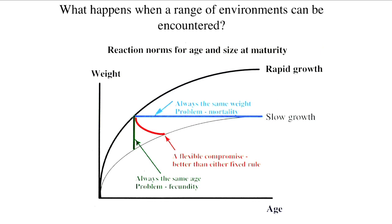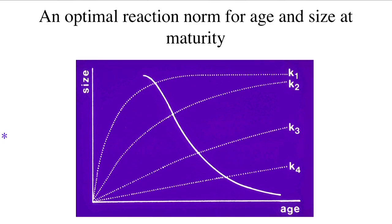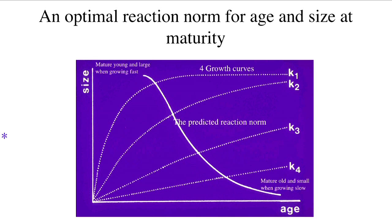If you go through the calculations, this is the optimal situation predicted by a theoretical model for the maturation event when there is variation in growth. The dotted lines represent four different growth curves — the top one is fast growth, the bottom is slow growth. The thick line is the predicted reaction norm, relating age on the x-axis to size on the y-axis. Basically, the optimal strategy is to mature young and large when growing fast, and to mature old and small when growing slow.